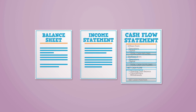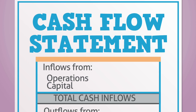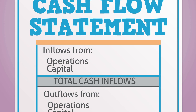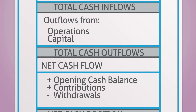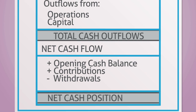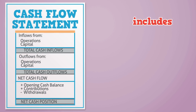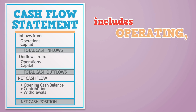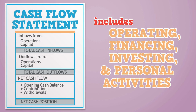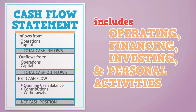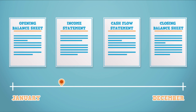The cash flow statement tracks movement of cash into and out of the business over the year, highlighting surpluses, shortfalls, and upside and downside risks. This includes operating, financing, investing, and personal activities that occurred over the fiscal period.